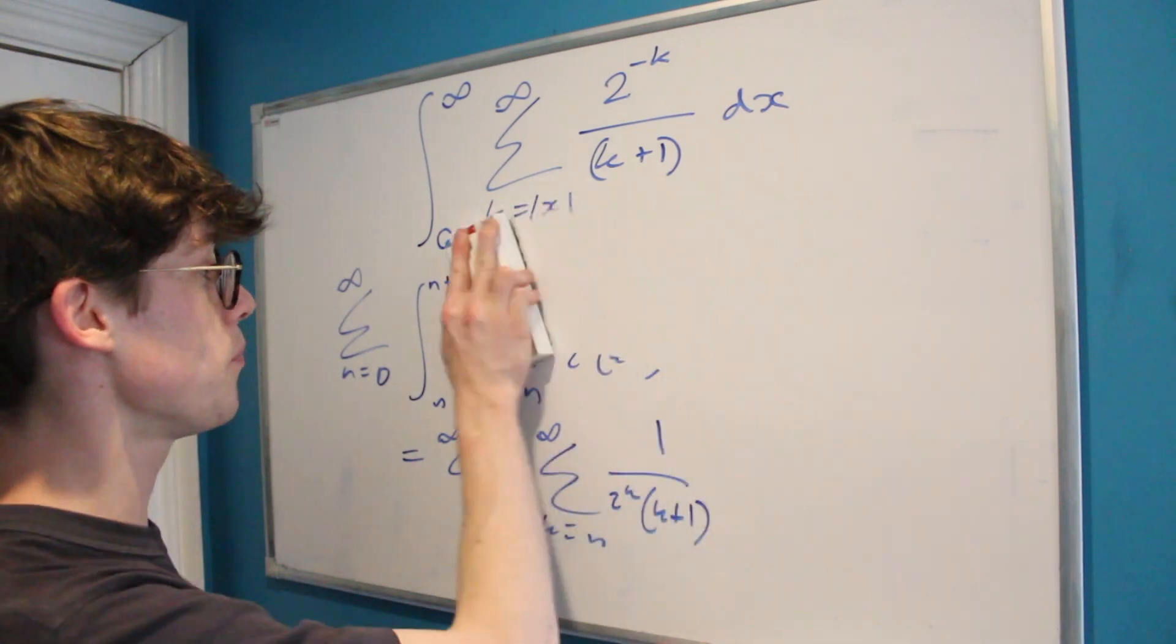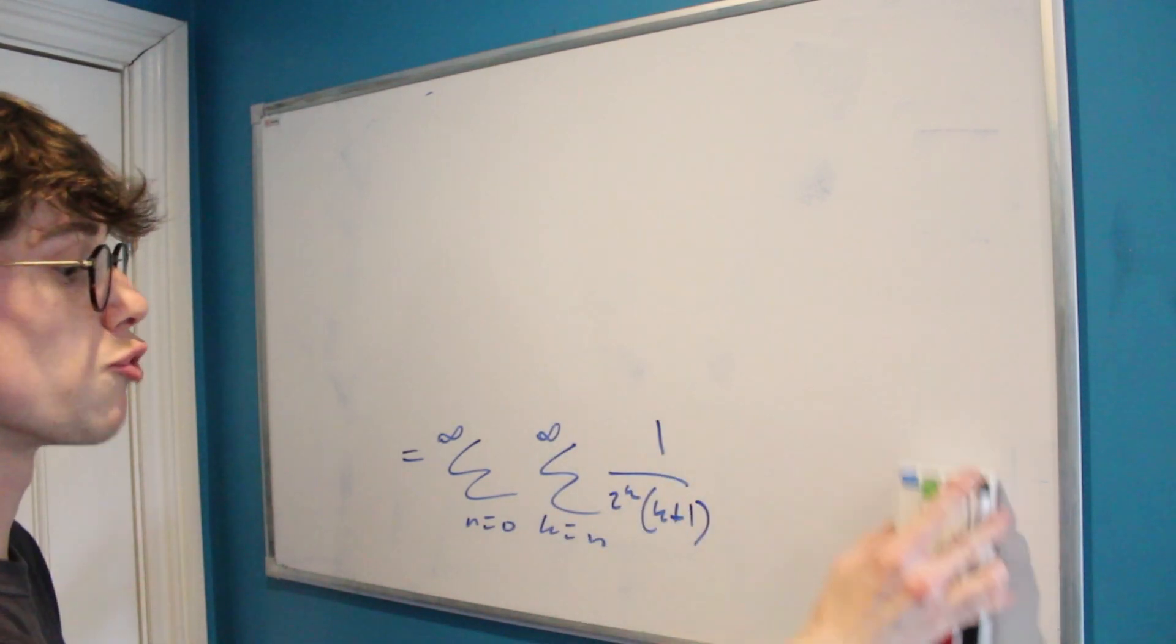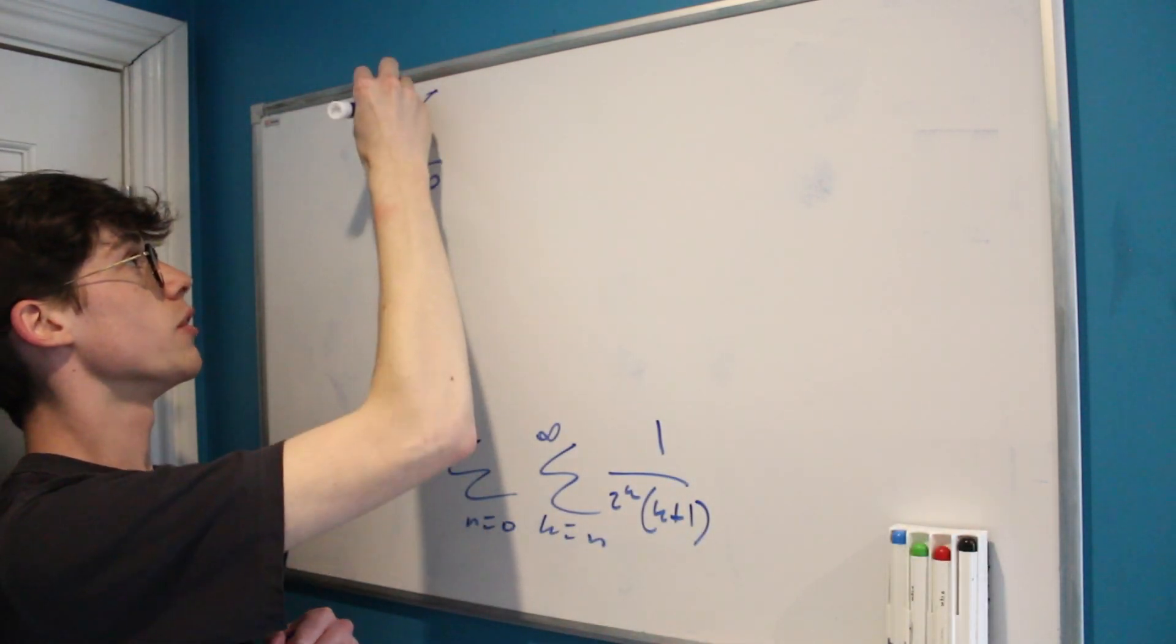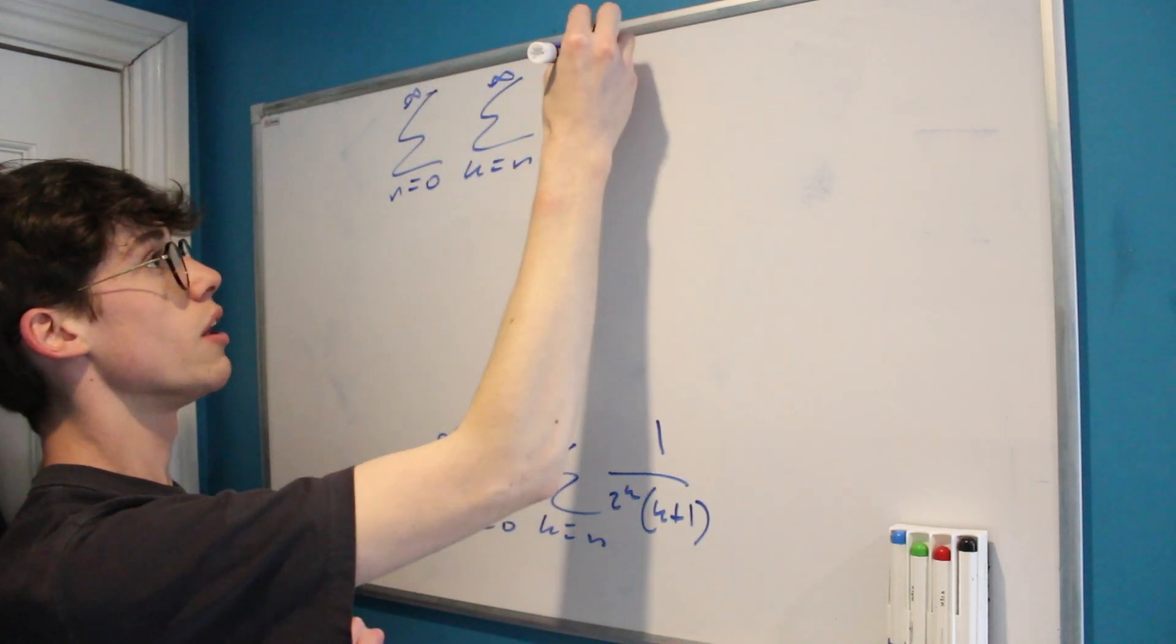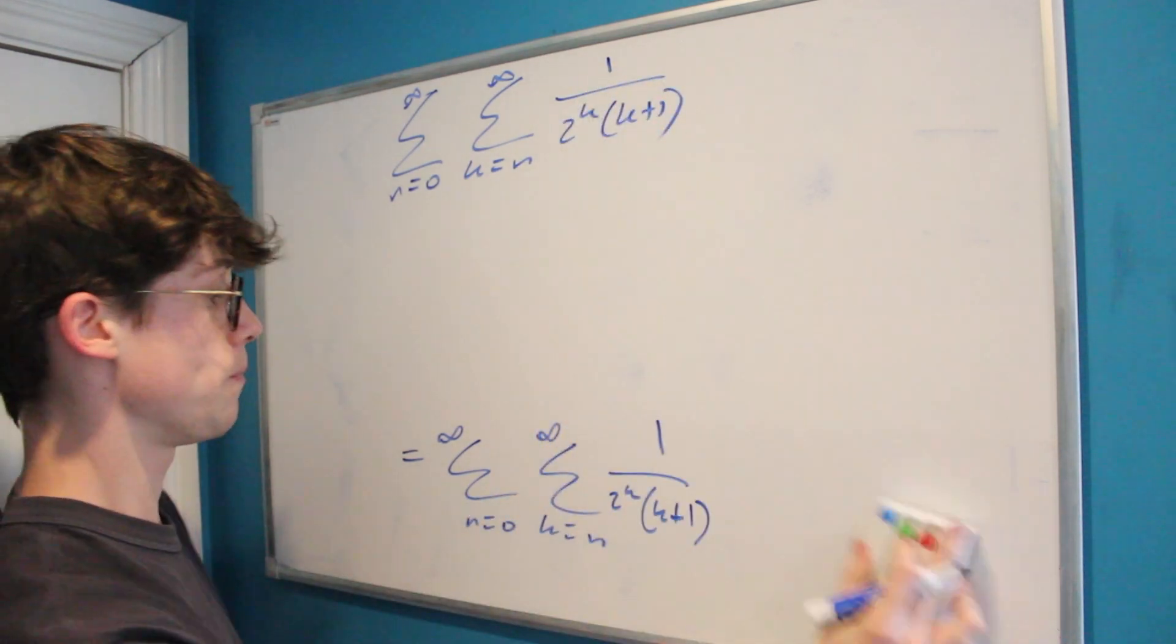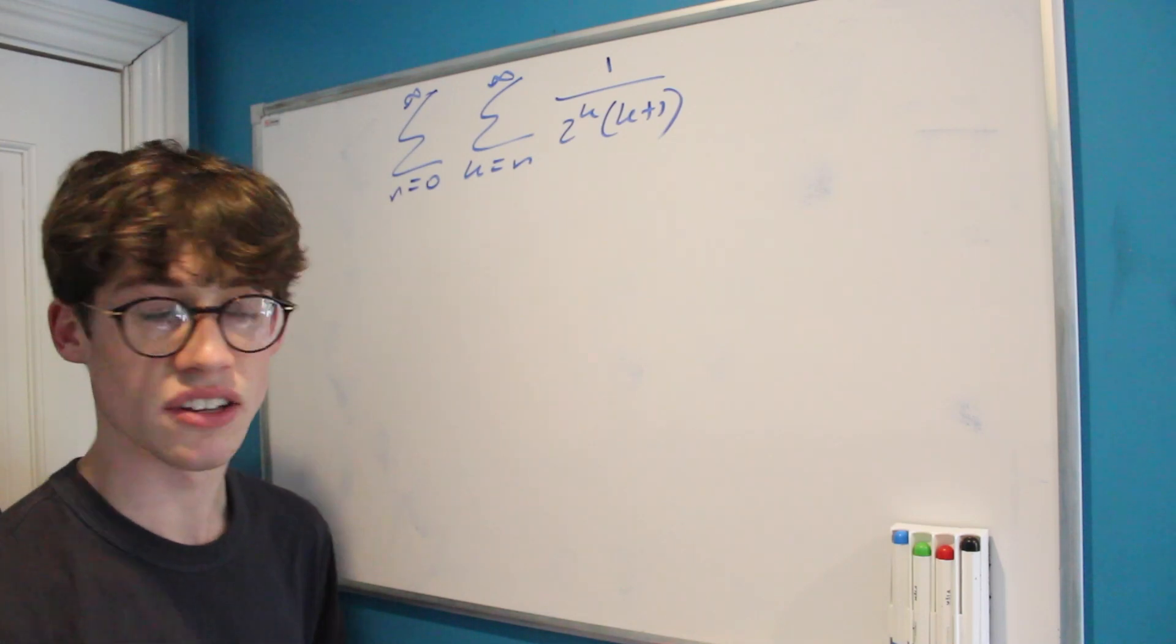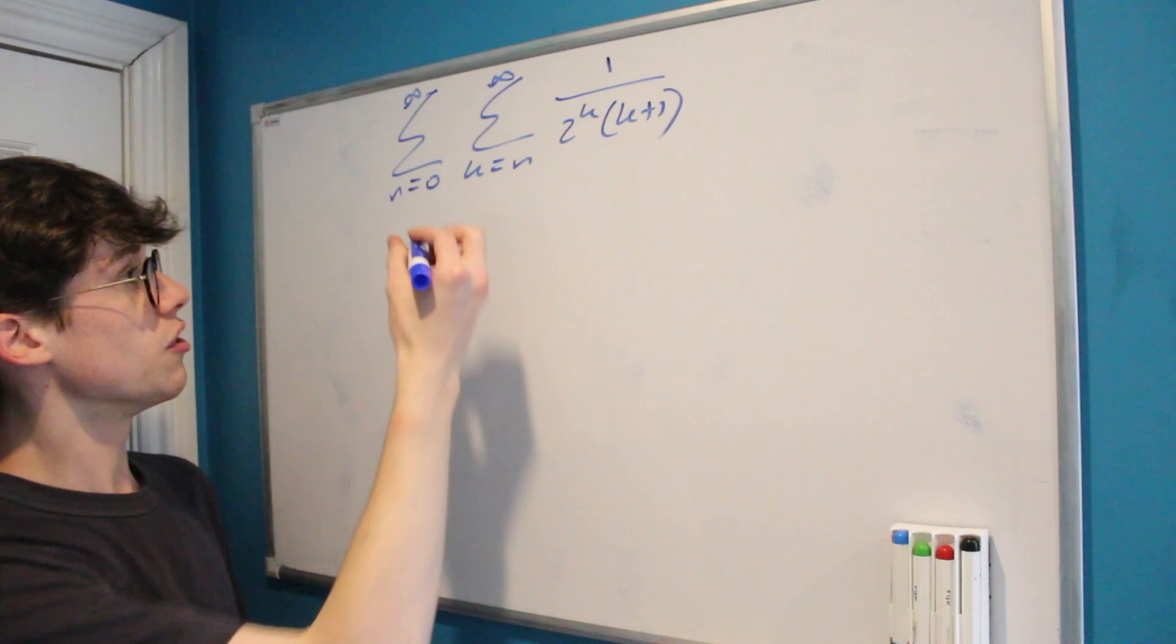So this is quite a big step, so we're going to make some space on our board and we're going to rewrite this at the top, because this is the real problem that we're solving. It's the sum from n equals 0 to infinity of the sum from k equals n to infinity of 1 over 2 to the k times k plus 1. So I always think with sums that look as complicated as this it's good to write out what we're dealing with.